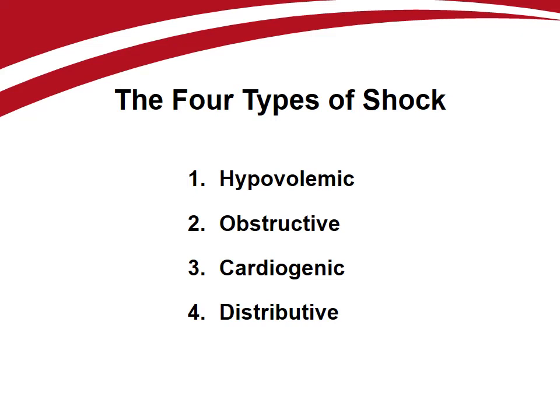Almost 50 years ago, Shubin and Weil described four types of shock based upon characteristic cardiovascular parameters. These include hypovolemic, obstructive, cardiogenic, and distributive shock. All shock states can be placed into one of these four categories.